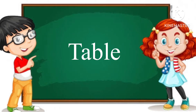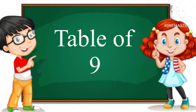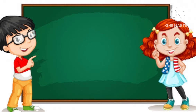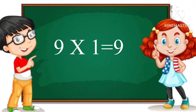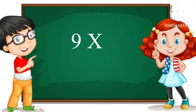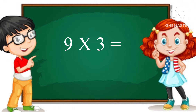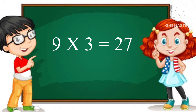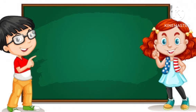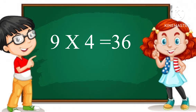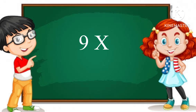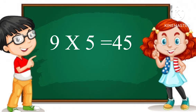Table of Nine. Nine ones are nine. Nine twos are eighteen. Nine threes are twenty-seven. Nine fours are thirty-six. Nine fives are forty-five.